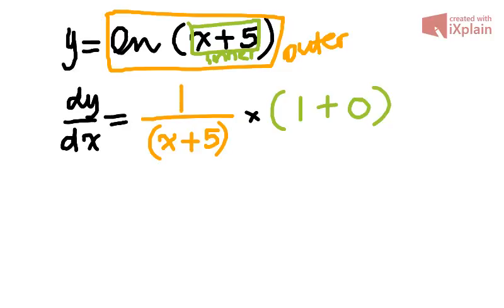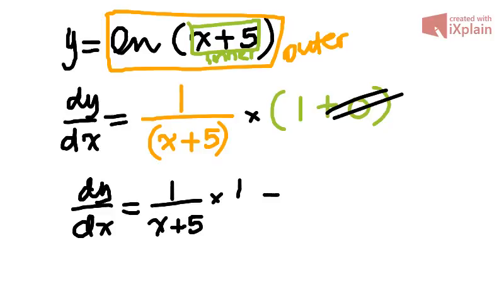Let's simplify this. Once the 0 can be dropped, the derivative of y with respect to x will be 1 over x plus 5 multiplied by 1. Well, that gives us exactly the same expression, 1 over x plus 5.